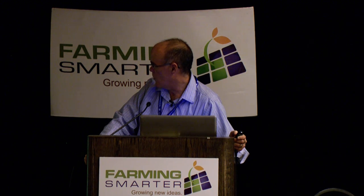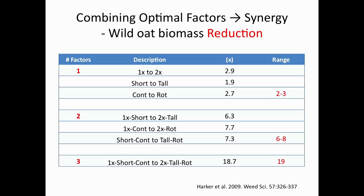Looking at the actual data in terms of wild oat biomass reduction, there are synergies as you add one practice to another. Doubling the seeding rate reduces wild oat biomass by almost threefold; going from a short to a tall variety gives twofold, similar with rotation. Put two of those practices together and you can reduce wild oat biomass six- to eightfold. When you add all three together, it's a 19-fold reduction in wild oat biomass with no change in what you do with herbicides.